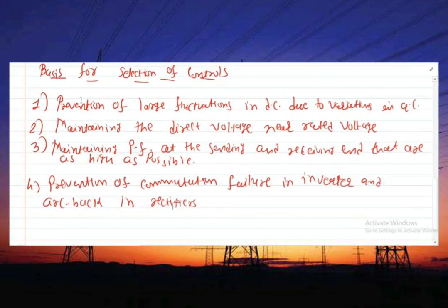Now we understand in detail all these four basic influences. The first influence is prevention of large fluctuations in DC, perturbation in DC. Rapid control of the converters to prevent large fluctuations in direct current is important to ensure satisfactory operation of HVDC transmission system.